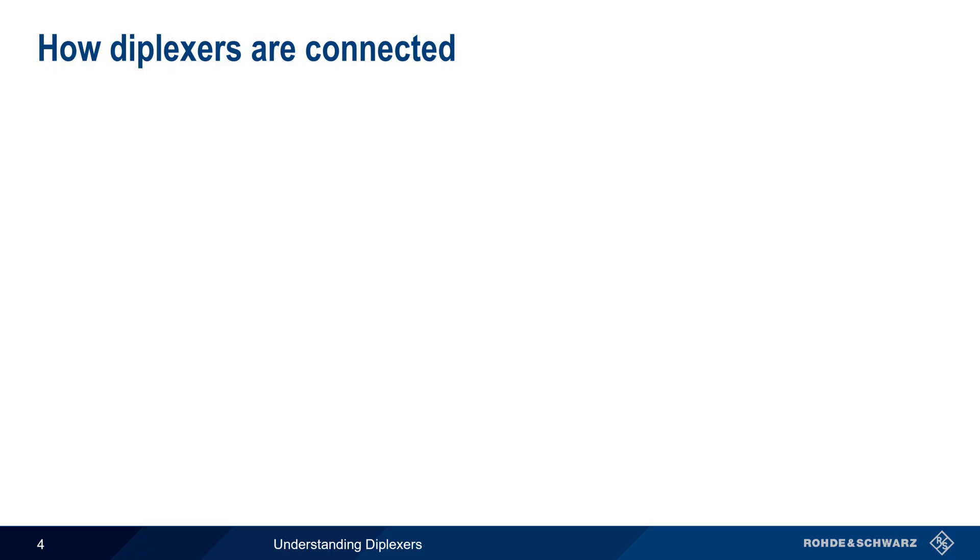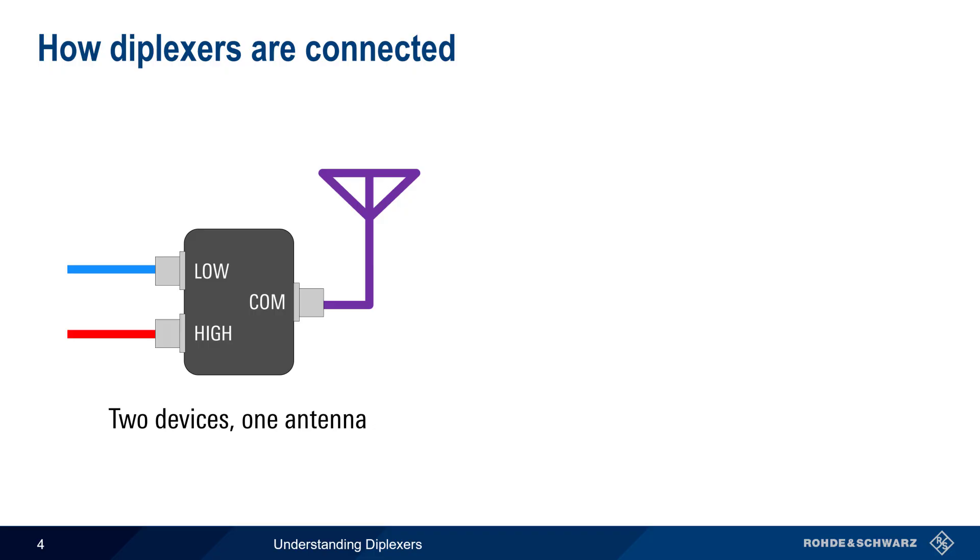Let's now come back to the topic of how diplexors are connected. Most often a diplexor is used to connect two devices, transmitters and or receivers, to a single antenna. An example of this would be a radio that has separate connectors for different frequency bands, but which is being used with a multi-band antenna.